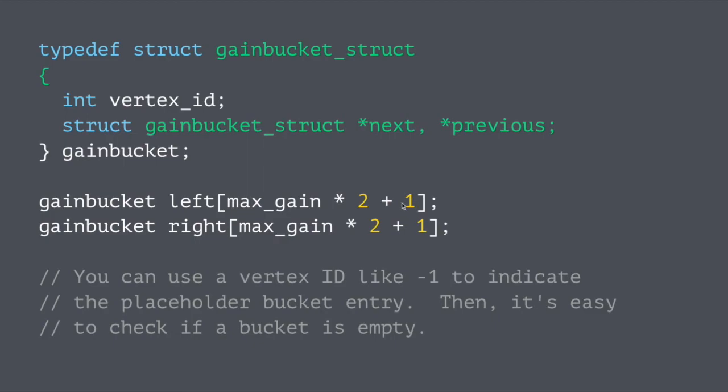And also we have a bucket there for 0. So the range is going to be plus or minus Pmax, and we've got this extra one for 0. We have separate gain bucket structures for the left-hand side and the right-hand side. When I implement this, I usually use something like negative 1 to indicate a placeholder entry in the gain bucket, and it's easy to check to see if a bucket's empty if you've done that.